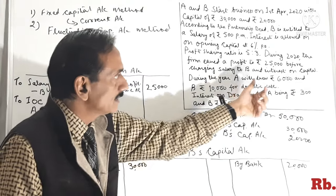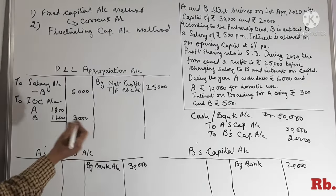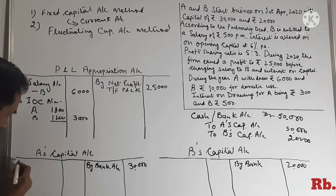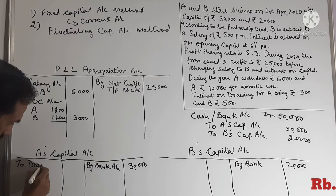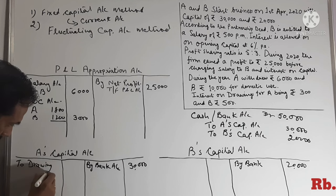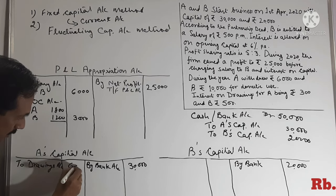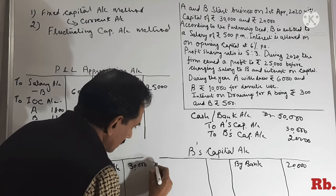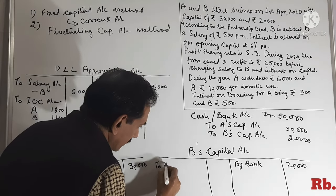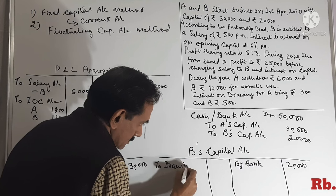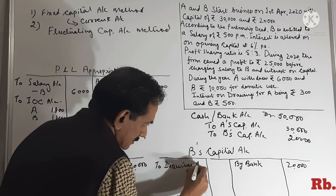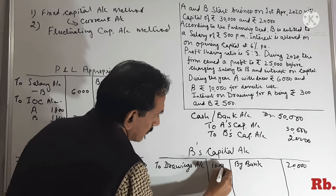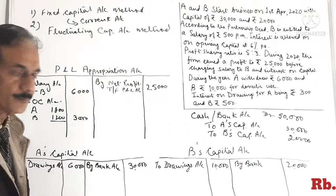To hum A ke current account mein Rs.6,000 debit kar denge — drawings account Rs.6,000. Aur B ke case mein Rs.10,000.